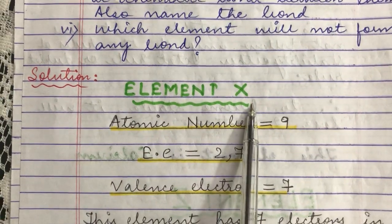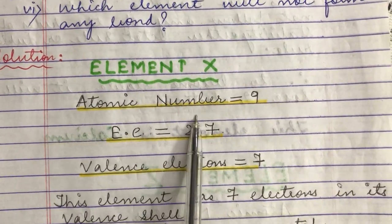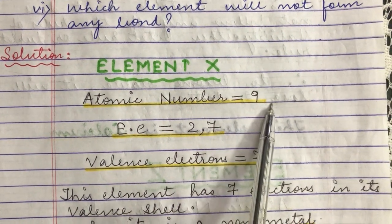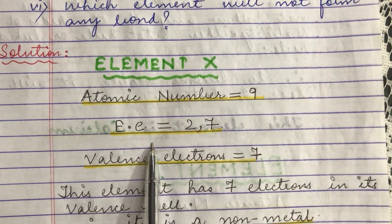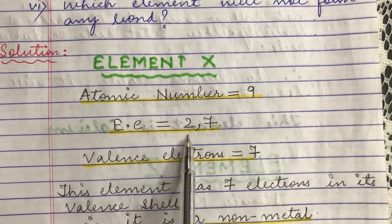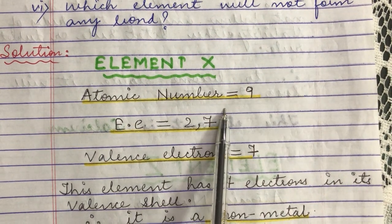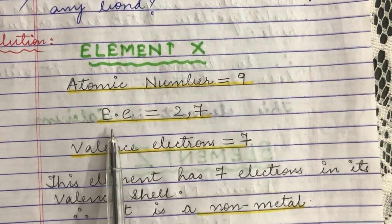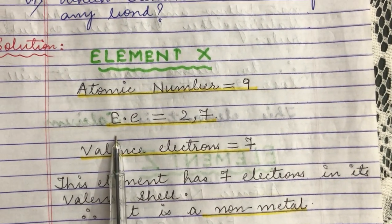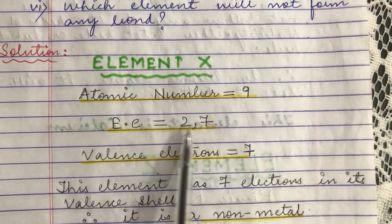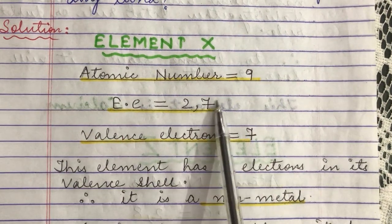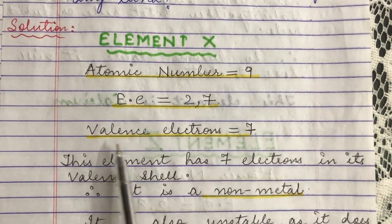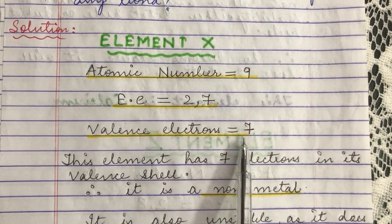Element X has an atomic number of 9. Since atomic number tells us the total number of electrons, its electronic configuration will be 2,7. It has 7 electrons in its outermost shell. Therefore, the valence electrons present in it are 7.